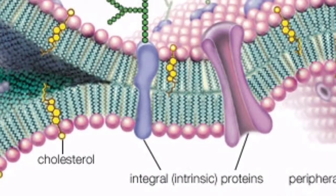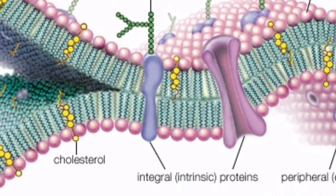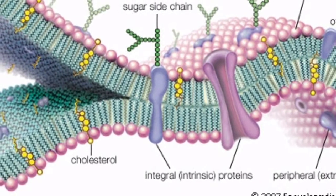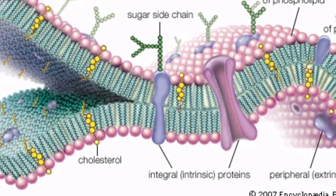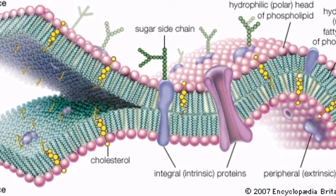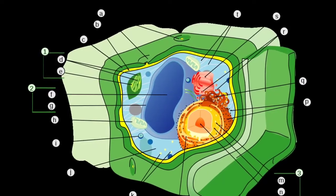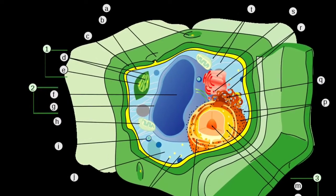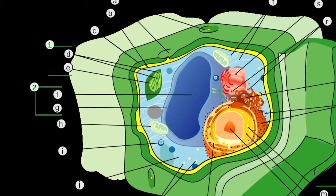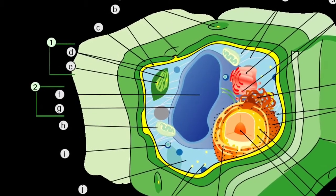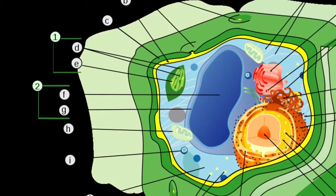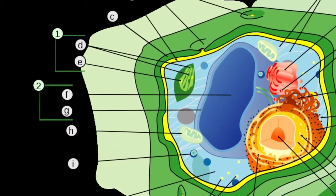Components of the cell are enclosed in a membrane. This membrane provides shape to the cells of plants as well as animals. Cell wall is an additional covering over the cell membrane in plants — animals do not have a cell wall. Cell wall gives shape and rigidity to the cells. Bacteria cells also have a cell wall.